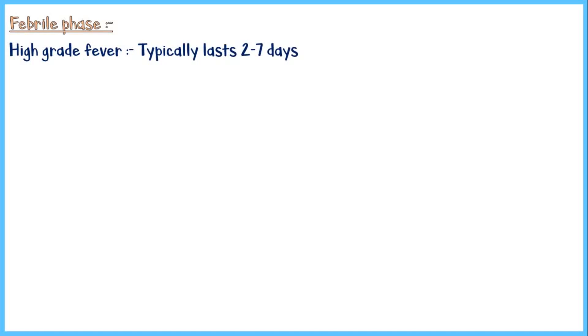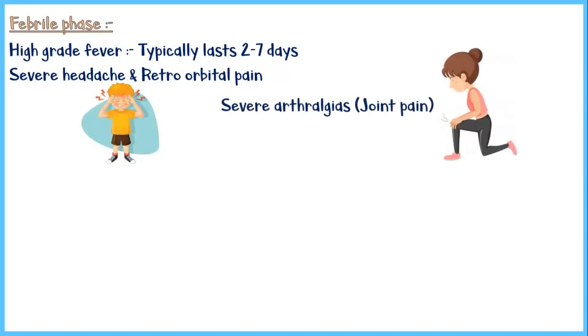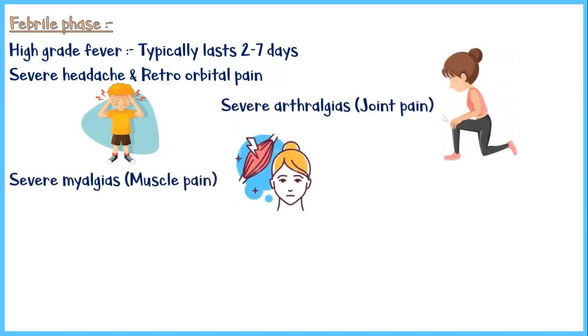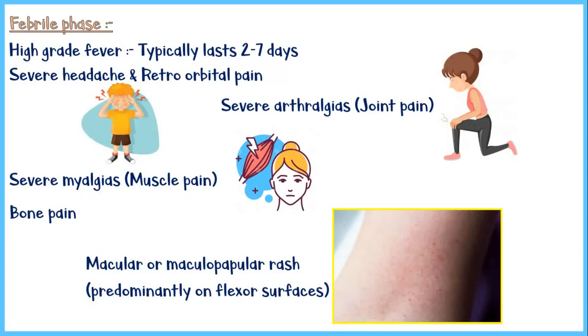In the febrile phase, high-grade fever is the predominant symptom. In addition, the patient may complain of severe headaches along with retroorbital pain, severe arthralgias or joint pains, severe myalgias or muscle pain, and bone pain. Some people may also present with a macular or maculopapular rash, predominantly seen on flexor surfaces.